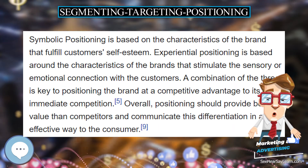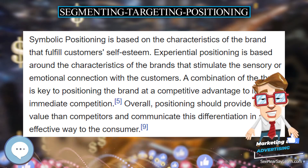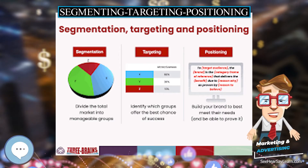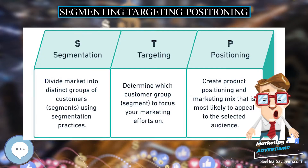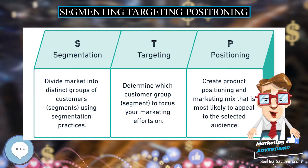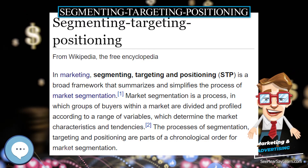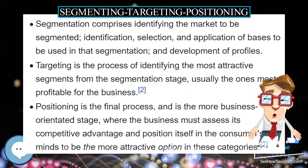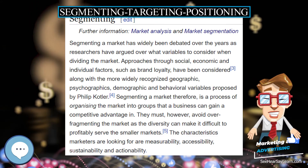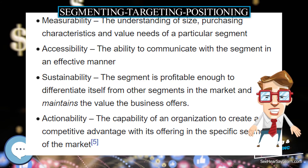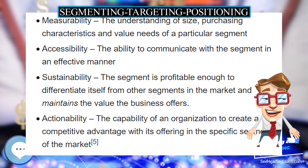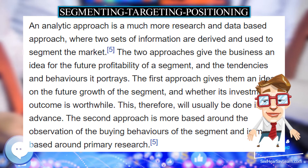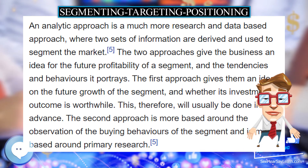Behavioral targeting is based around the collection of cookies — small pieces of information collected by a consumer's browser and sold to businesses to identify potential segments to appeal to. For example, someone consistently accessing photography-based searches is likely to have advertisements for camera sales appear, due to the cookie information showing an interest in this area. Whilst targeting a market, there are three different market coverage choices: undifferentiated, differentiated, and niche marketing. Undifferentiated marketing is best for the market as a whole, whilst differentiated and niche marketing are more specialized and focus on smaller, more selective segments.